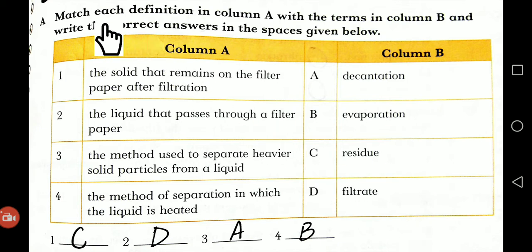So the first part is: match each definition in column A with the terms in column B and write the correct answers in the spaces given below. You have not done direct matching. The statements in column A are written in this statement, okay. So first of all we will read the first statement.